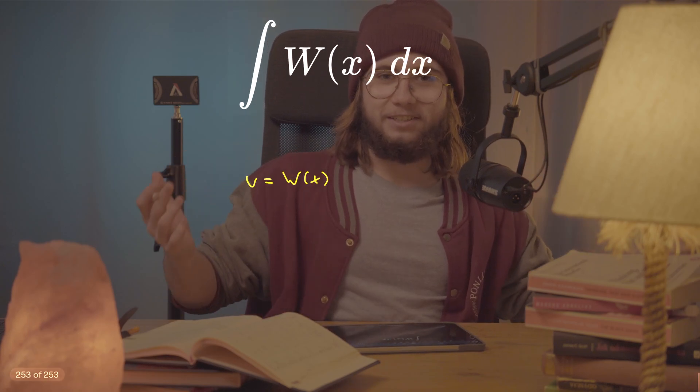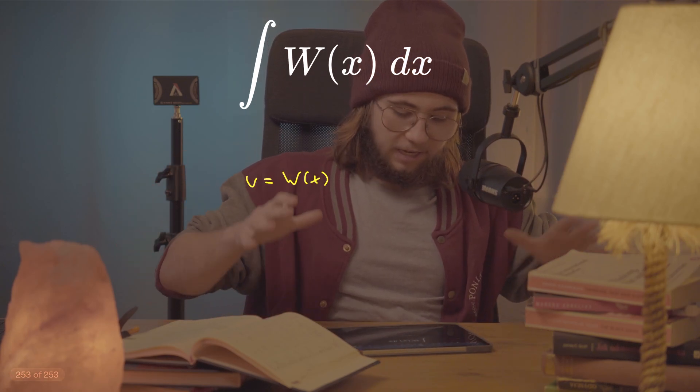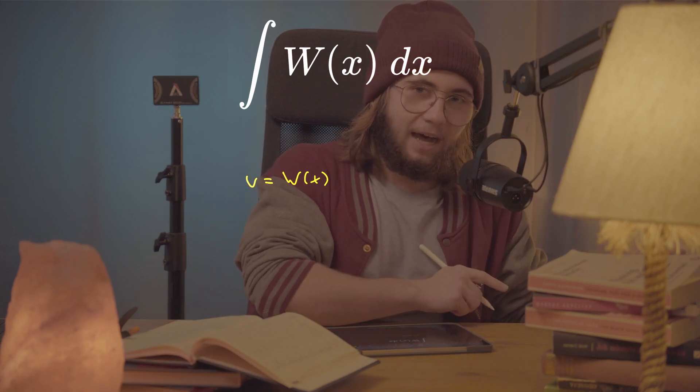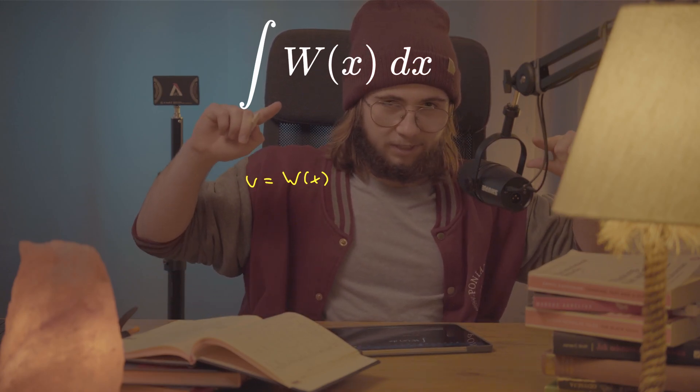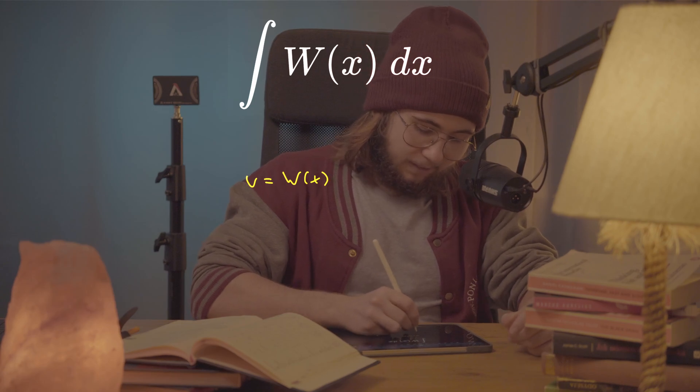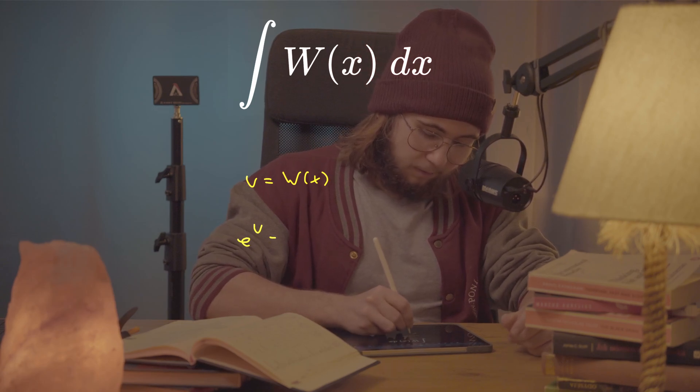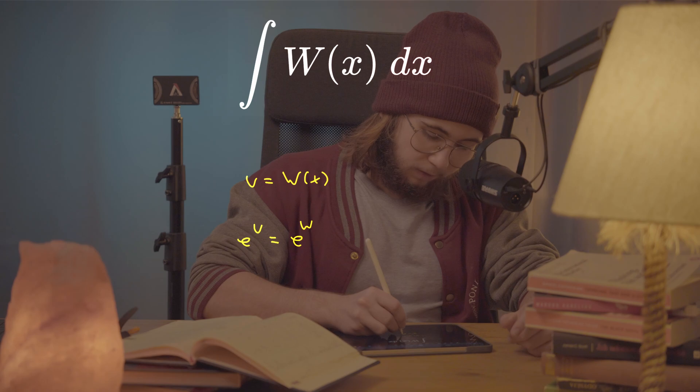And so why this obscure u-sub is going to work: because now if I exponentiate both sides, raise e to the power of both hand sides of this equation, I'm going to get e to the power of u be equal to e to the power of the W of x.